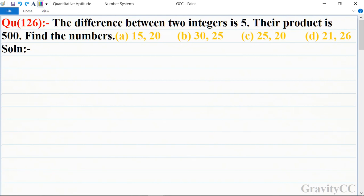Quantitative Aptitude, Chapter Number Systems, Question 126: The difference between two integers is 5 and their product is 500. Find the numbers.